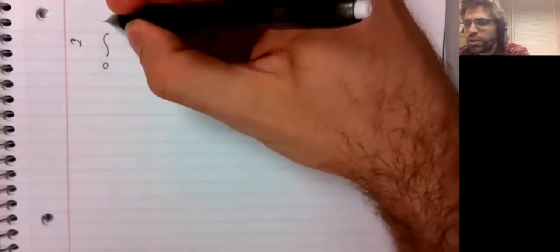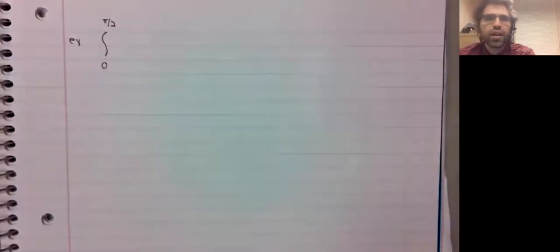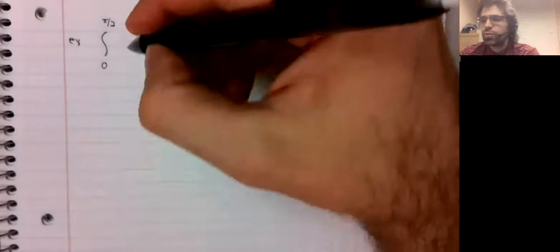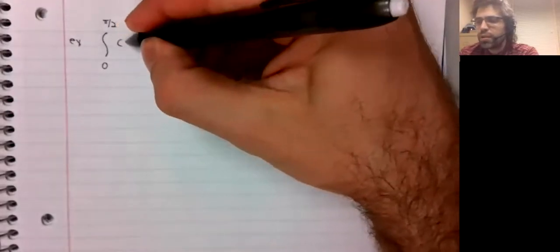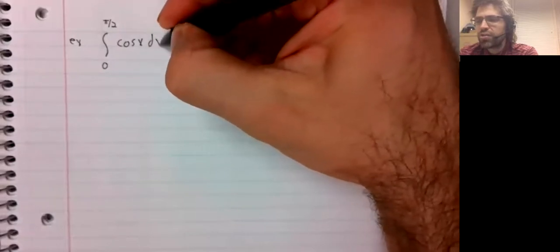Let's look at a few examples. Let's find the definite integral from zero to pi divided by two of the cosine of x dx.